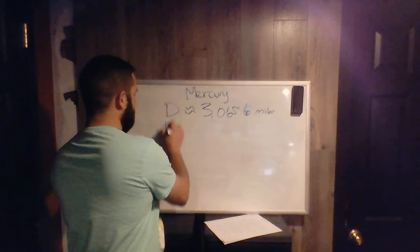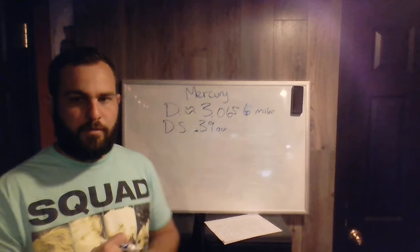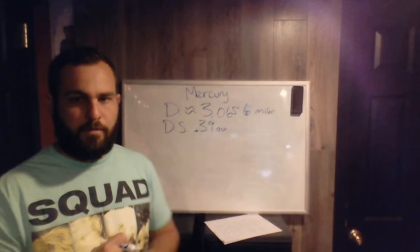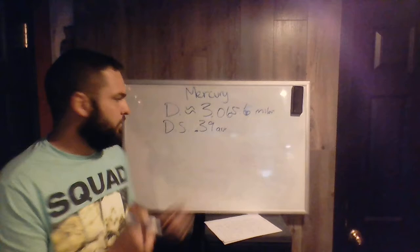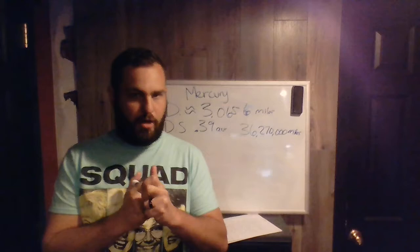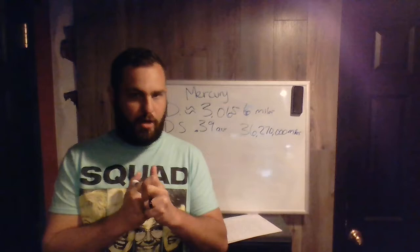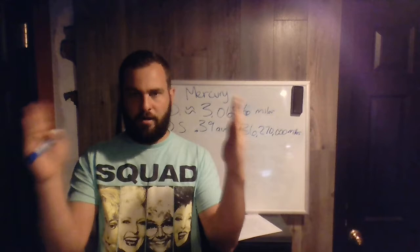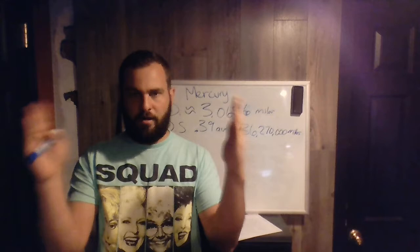The distance from the Sun is about 0.39 AUs — astronomical units. Remember that an astronomical unit is about 93 million miles. So this isn't even one astronomical unit. That would put Mercury at about 36,270,000 miles from the Sun. Now remember, this is measured not from the edge of the Sun to the edge of Mercury, but from the center of the Sun to the center of Mercury.